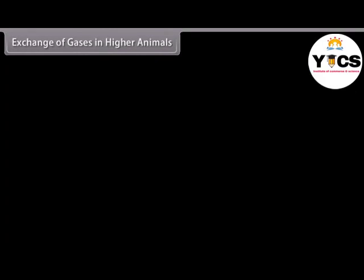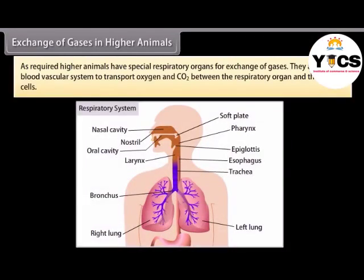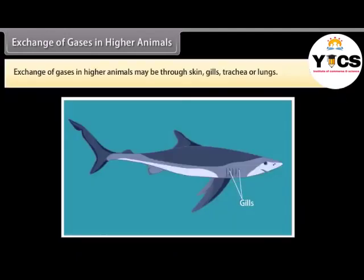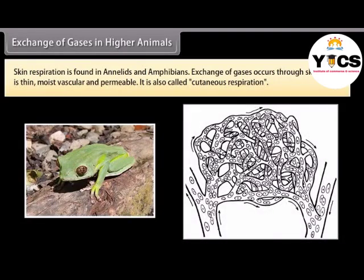In higher organisms, the body wall is thick, so diffusion is not possible, and they have a high metabolic rate requiring high energy. Higher animals therefore have special respiratory organs for the exchange of gases, and also have a blood vascular system to transport oxygen and CO2 between the respiratory organ and body cells. Exchange of gases in higher animals may be through skin, gills, trachea, or lungs. Skin respiration is found in annelids and amphibians; exchange of gases occurs through the skin which is thin, moist, vascular, and permeable. It is also called cutaneous respiration.